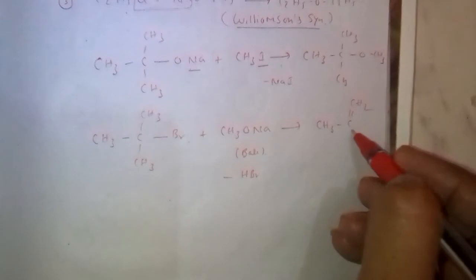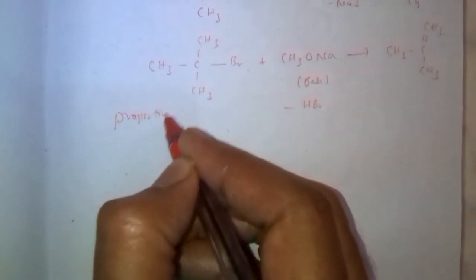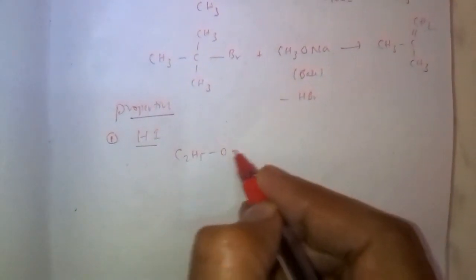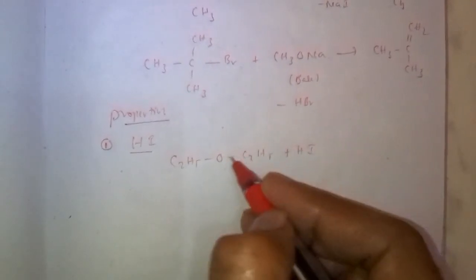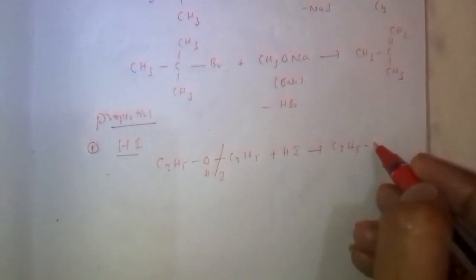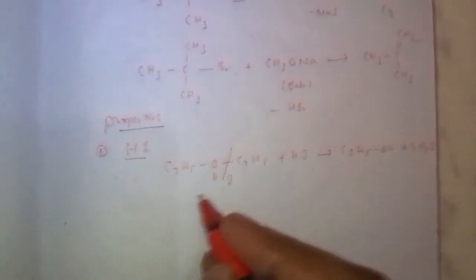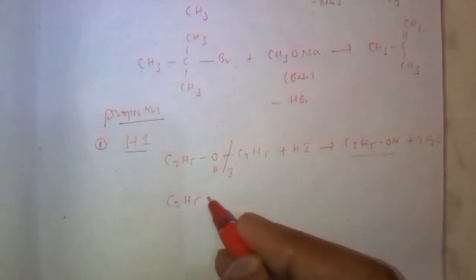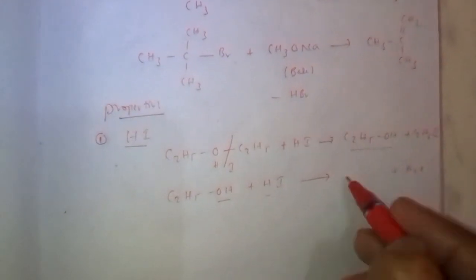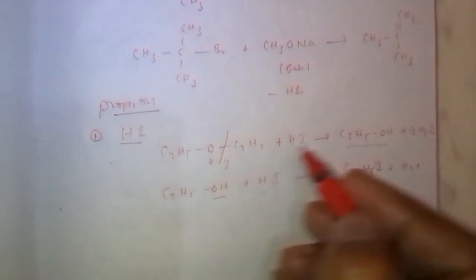In case of this one, ether is not formed. Properties of ethers. First one, reaction with hydrogen iodide. C2H5-O-C2H5 plus HI, hydrogen iodide. This bond is broken, hydrogen attaches to oxygen, iodine attaches to C2H5. It converts to C2H5OH plus C2H5I. This forms alcohol. Again reacts with HI, C2H5OH plus HI, then OH minus H plus water molecule is removed, converts to C2H5I. So when reacted with HI, the intermediate product is alcohol, final product is ethyl iodide.